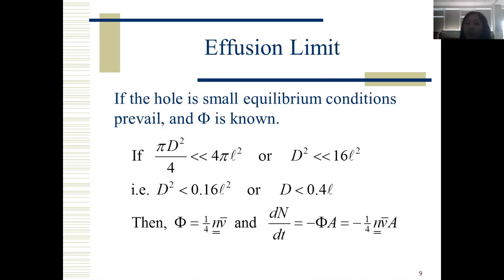Effusion limit. If the hole is small, equilibrium conditions prevail, and Φ is known. This formula gives the effusion limit. If πd² over 4 is much less than 4πL², where d is the diameter of the hole and L is the mean free path, this formula determines the effusion limit.